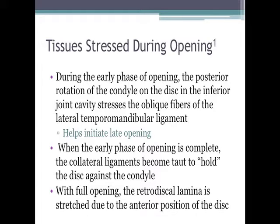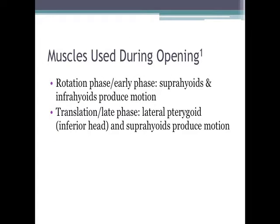When the early phase of opening is complete, the collateral ligaments become taut to hold the disc against the condyle. With full opening, the retrodiscal lamina is stretched to the anterior position of the disc. During the early phase, the suprahyoids and infrahyoids help to produce the motion. During the late phase, the lateral pterygoid — specifically the inferior head — and the suprahyoids help to produce the motion.